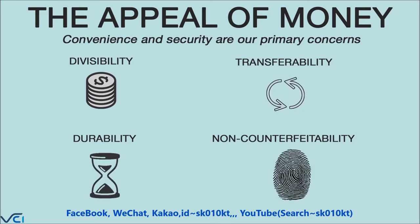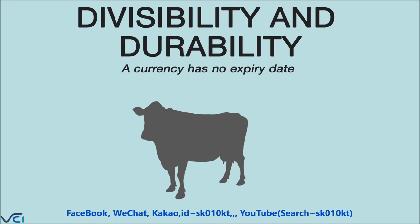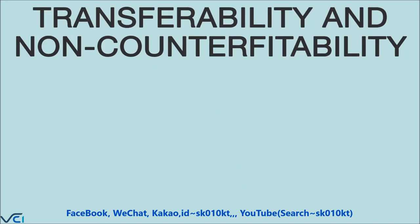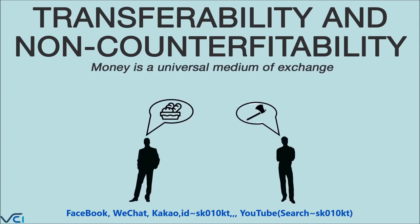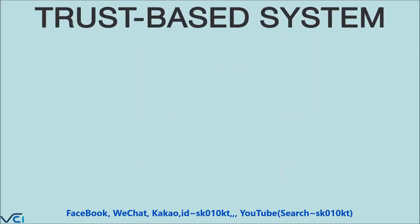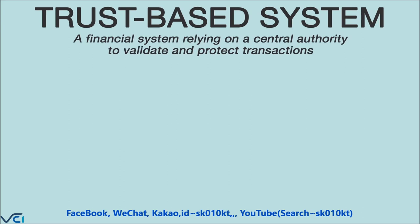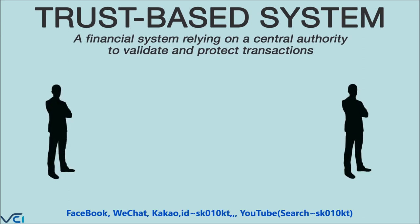Those four factors are: divisibility, durability, transferability, and non-counterfeitability. The shift from barter to currency dramatically improved divisibility and durability — a cow farmer, for example, can't sell a third of a cow to buy two dozen eggs, nor sell a cow that is too old or poorly cared for. Currency solved these inconveniences, and digital technology further enhanced divisibility, durability, transferability, and non-counterfeitability. You don't need to find a seller of exactly what you need who also wants exactly what you have.